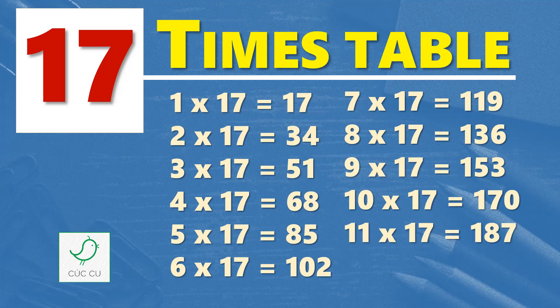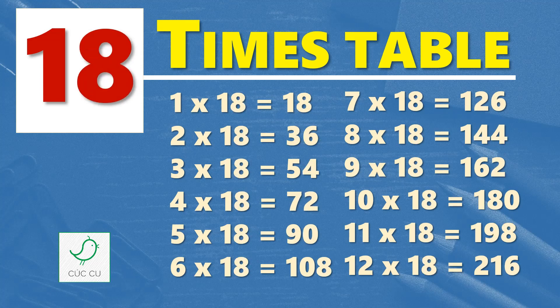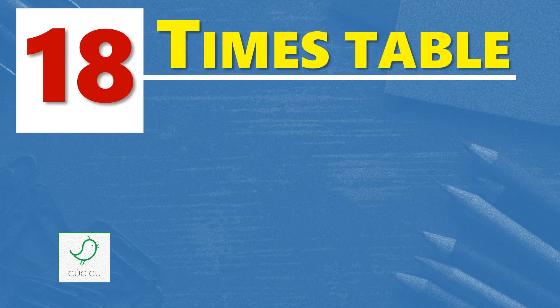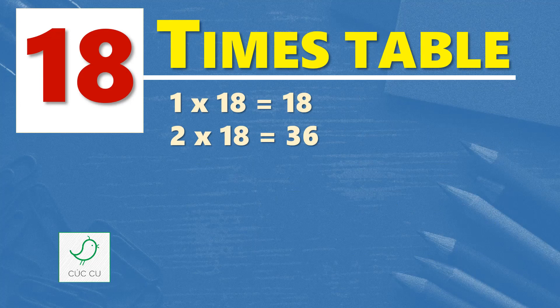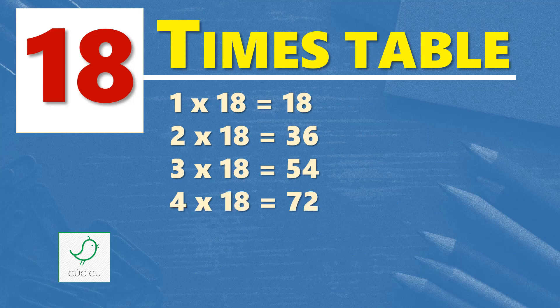Eleven times seventeen are one hundred and eighty-seven, twelve times seventeen are two hundred and four. Three times eighteen are fifty-four, four times eighteen are seventy-two.